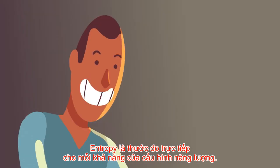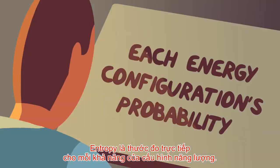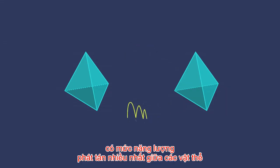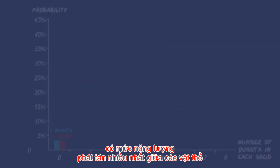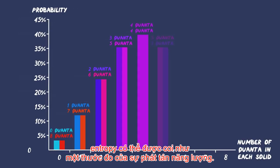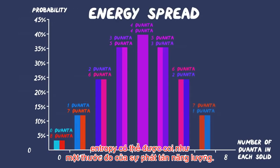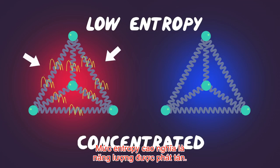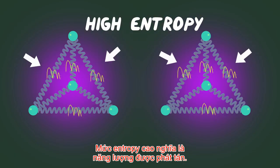Entropy is a direct measure of each energy configuration's probability. The energy configuration in which the energy is most spread out between the solids has the highest entropy. So in a general sense, entropy can be thought of as a measurement of this energy spread — low entropy means the energy is concentrated, high entropy means it's spread out.